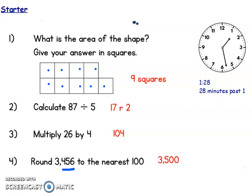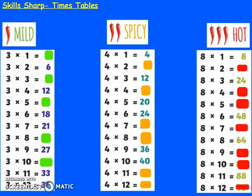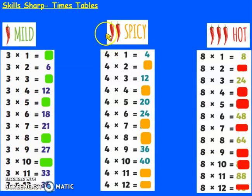Great start, Year 4. Let's have a look at Skills Sharp. Today's lesson we're going to be focusing on times tables, to recap some of the work we've done this term. Choose your challenge — mild, spicy, or hot — depending on which times table you think you need the most practice on. If you're not really confident with your 3s, go to mild. If you know your 3s but need more work on your 4s, go spicy. If you know your 3s and 4s and want to push yourself on the 8s, go to the hot challenge.